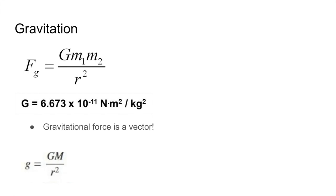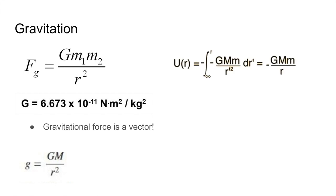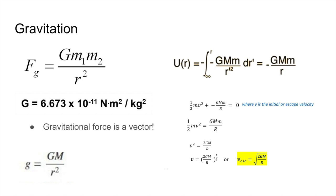The gravitational field is given by GM/r², where M is the mass producing the field and r is the distance from that mass. To sum gravitational forces, treat them as vectors. The gravitational potential energy is −GMm/r. Using this, we can derive the escape velocity: when kinetic energy plus potential energy equals zero, the velocity in that equation is the escape velocity. You don't need to memorize it since it's easy to derive from basic physics principles.